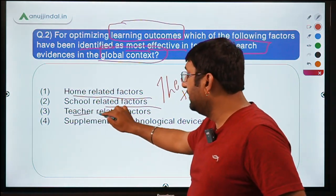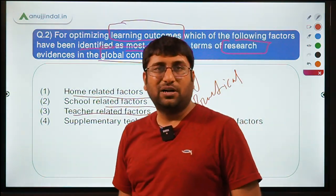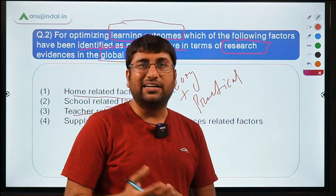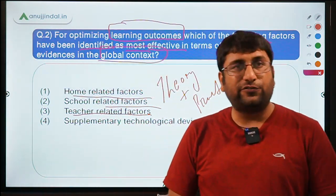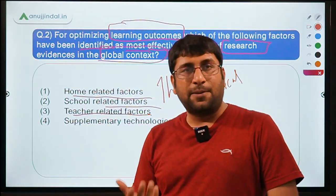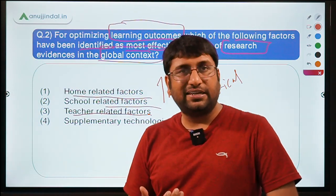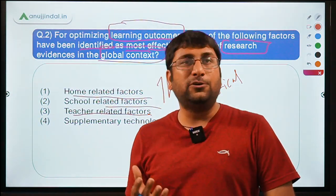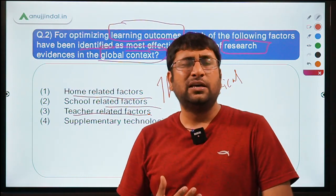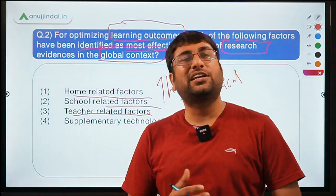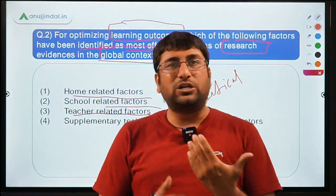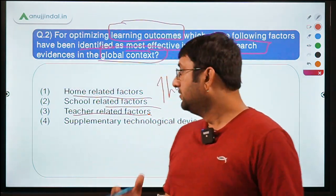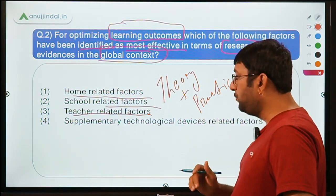Option C: teacher-related factors — how the teacher delivers content, their style and quality of teaching, whether they give enough examples, and whether they are available to guide and motivate students. Beyond teaching, a teacher has many roles: guiding students, motivating them, acting as friend and philosopher. So teacher-related factors are very important.